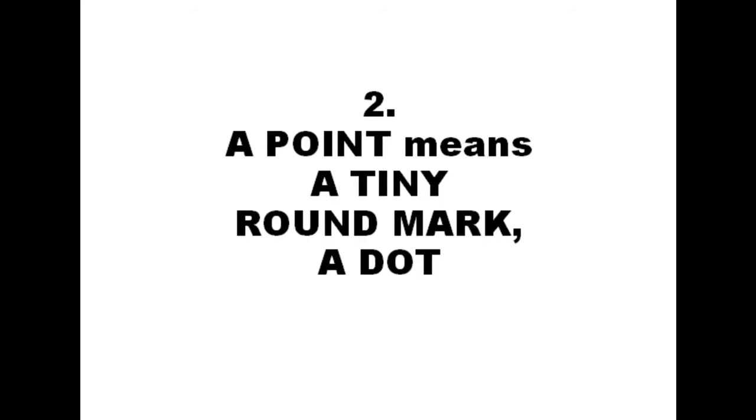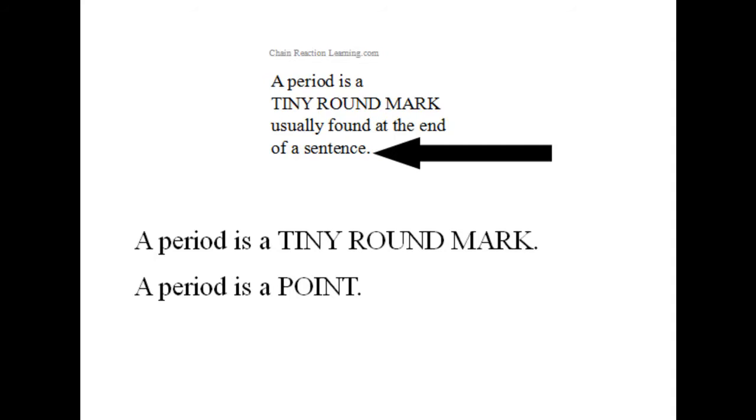A point means a tiny round mark, a dot. A period is a tiny round mark, a period is a point. Up above it says a period is a tiny round mark, usually found at the end of a sentence.